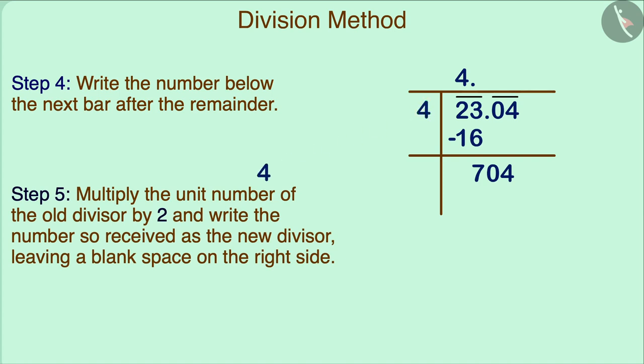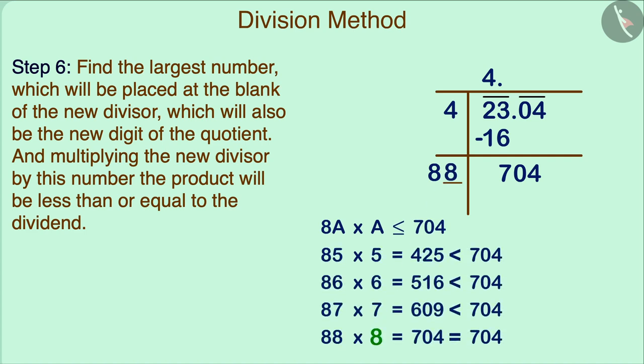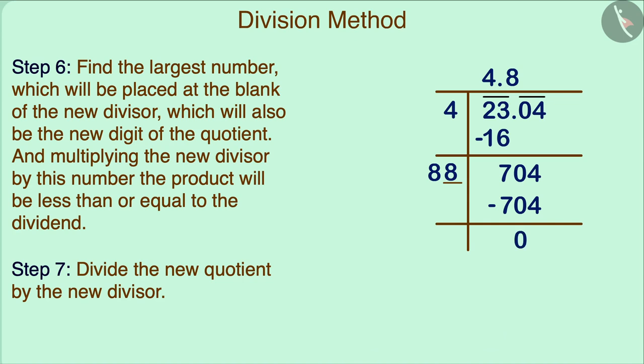Now, for the new divisor, multiply the unit digit of first divisor by 2. We will write the resulting number here, leaving a blank space to the right. Now, to fill in the blank, we will think of the largest possible digit, which will be the first digit after the decimal in the quotient. And when the new divisor is multiplied, the product obtained will be less than or equal to the dividend. So, our new digit here will be 8. We will write 8 after the decimal in the quotient. After this, 704 will be written under the new number to be divided. Then, we will subtract them.